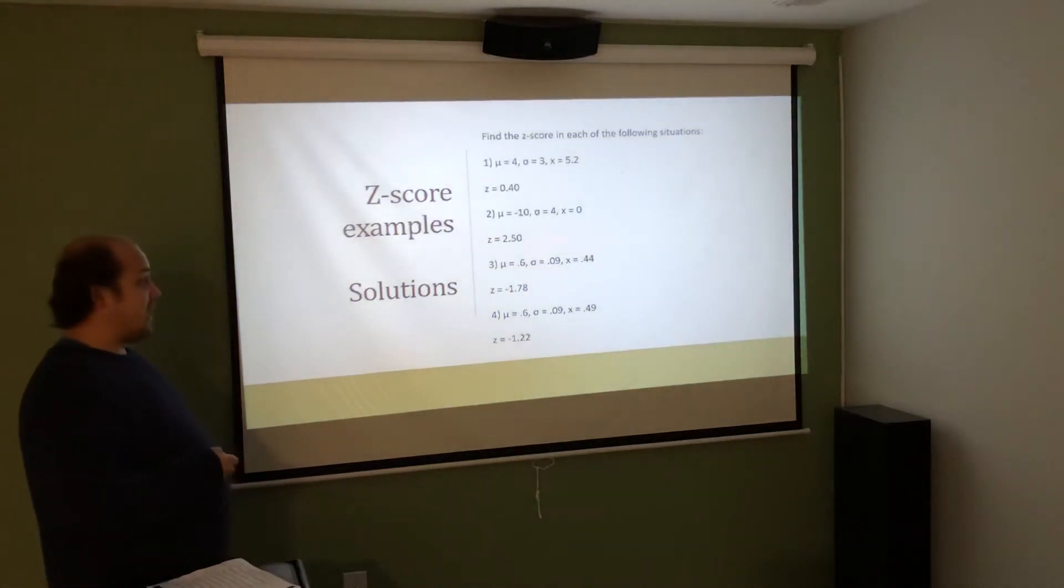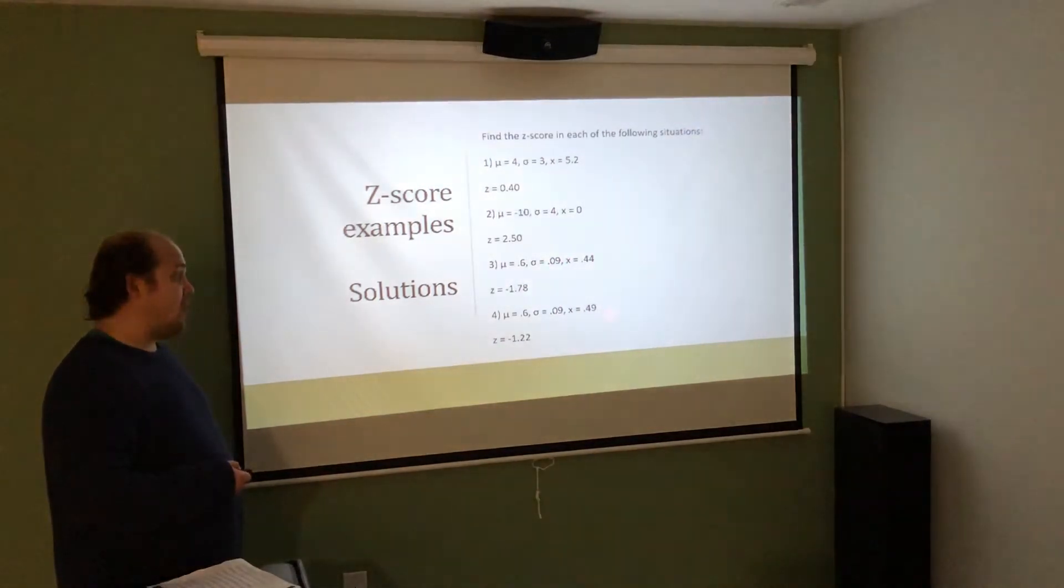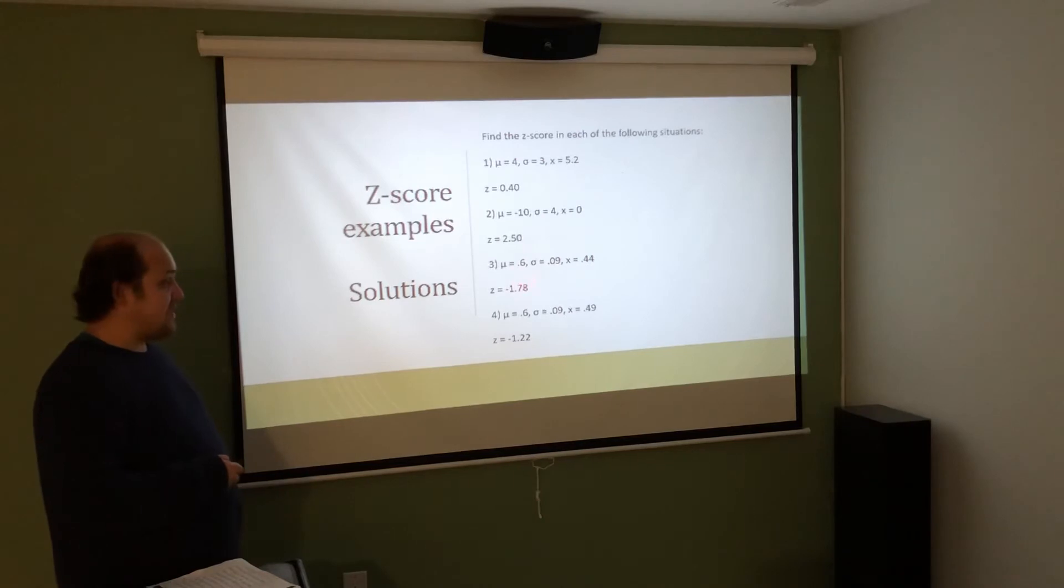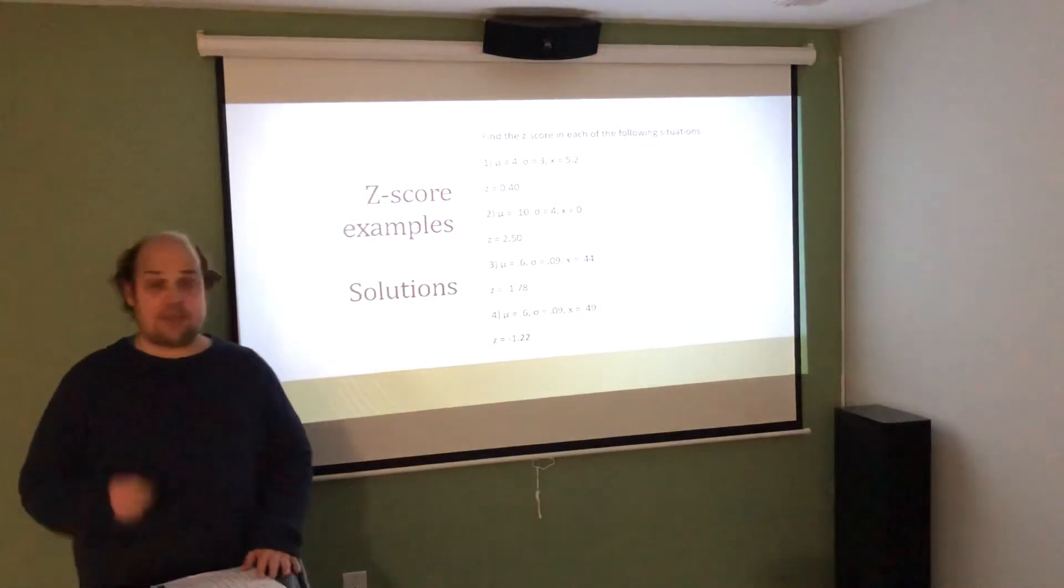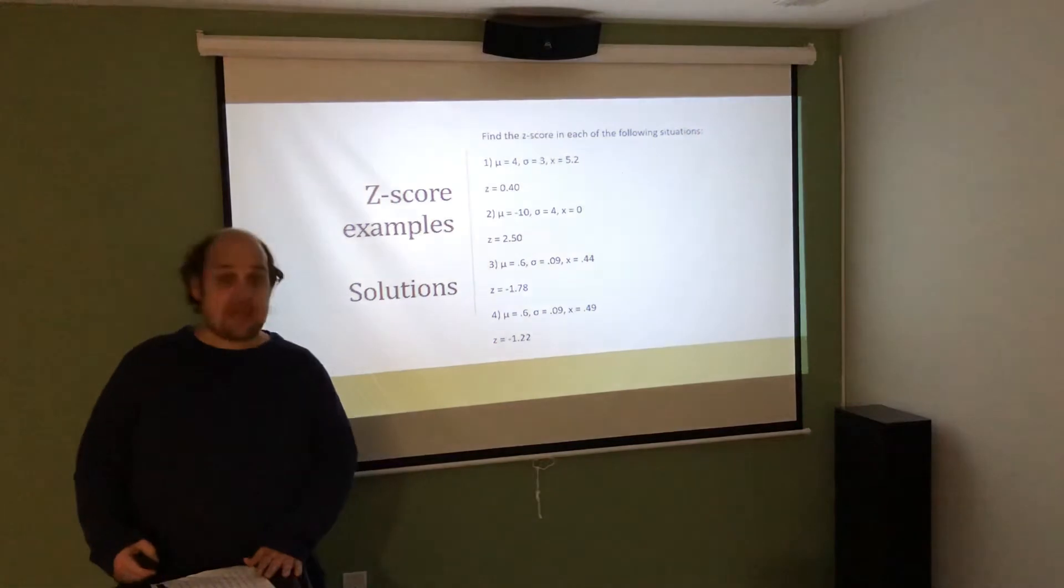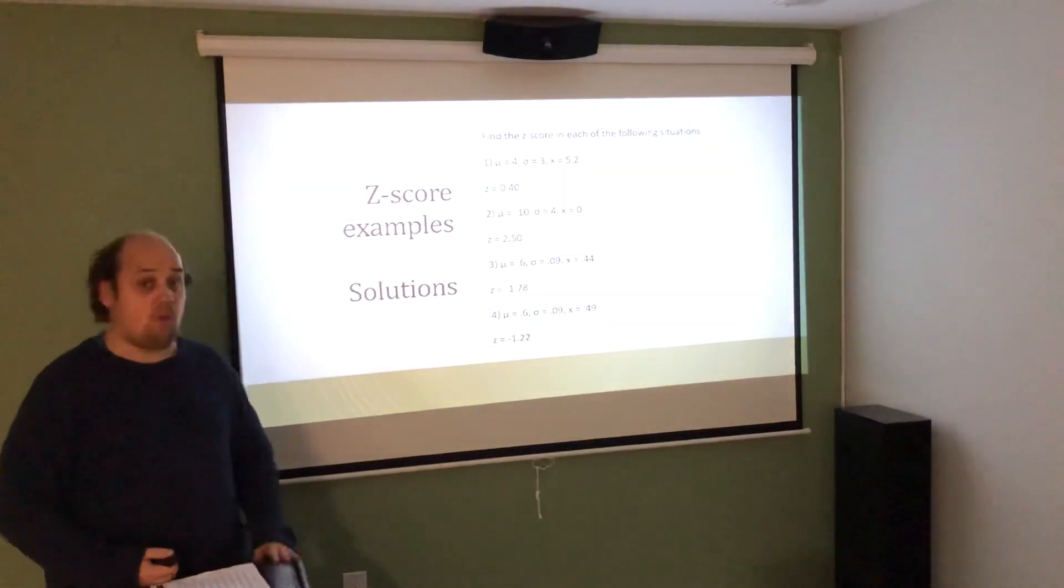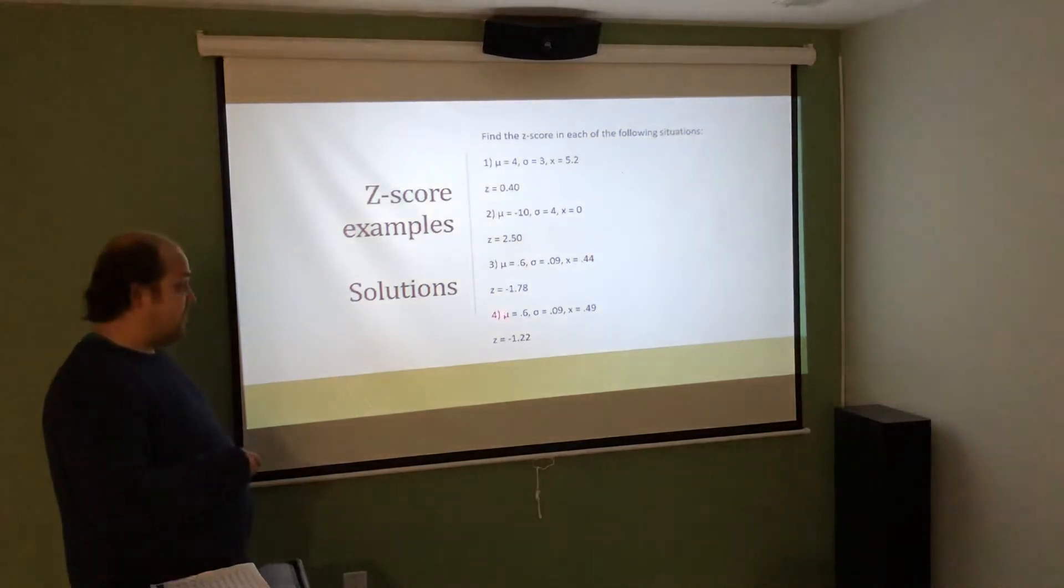For problem 3, I would take the X value, 0.44, minus the mean of 0.6. 0.44 minus 0.6 is negative 0.16. When I divide that by the standard deviation of 0.09, I get a Z score of negative 1.78. It really gives me negative 1.7777 repeating, but I round it to two decimals as negative 1.78. In problem 4 here, I take the X value of 0.49 minus the mean of 0.6. That would give me negative 0.11. When I divide that by the standard deviation of 0.09, I get a Z score of negative 1.22.